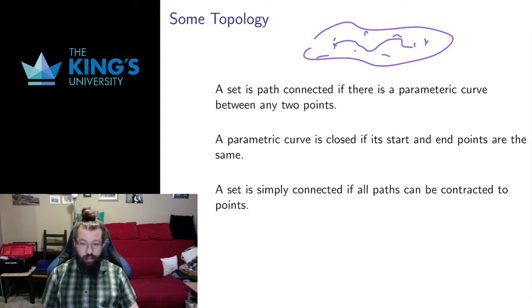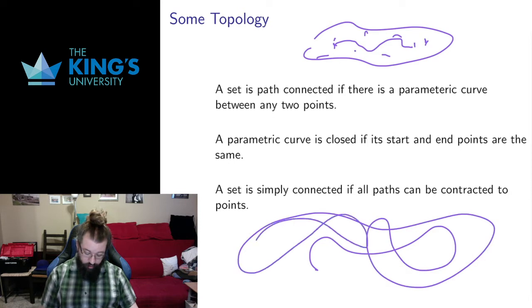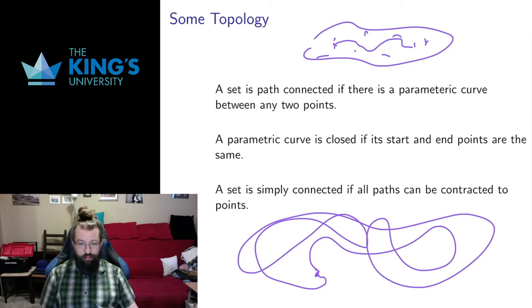A parametric curve is called closed if its start and end points are the same. So if I have some curve that starts here, goes around, can loop, can cross itself, but as long as it ends at the same place it starts, then it's called a closed curve.